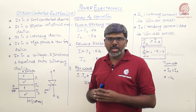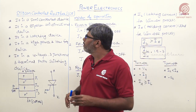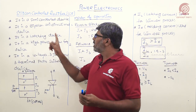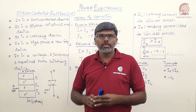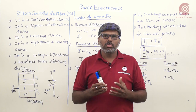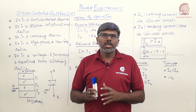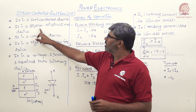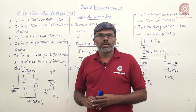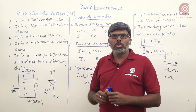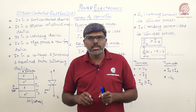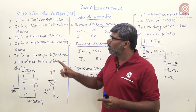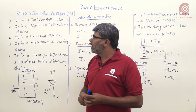Coming to its features, the SCR is a semi-controlled device. It is semi-controlled because turn on can be done with a control signal, but turn off cannot. It is also a bipolar unidirectional device — according to its characteristics, it blocks both polarities of voltage.